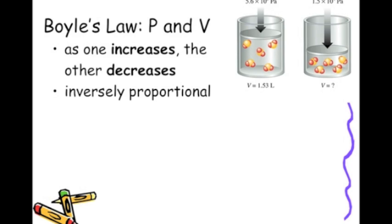Looking over here, we see that we have a pressure of 5.6 times 10 to the third pascals, and we see that it changes to 1.5 times 10 to the fourth pascals. So we've increased the pressure, but if we look at the volume of this cylinder, we see that we have decreased the volume. So pressure went up, volume went down.